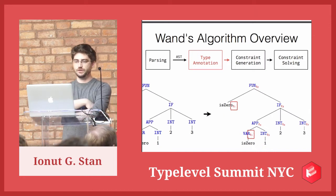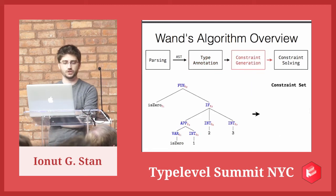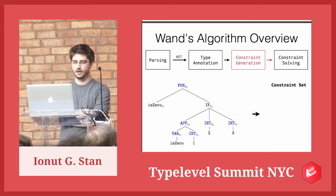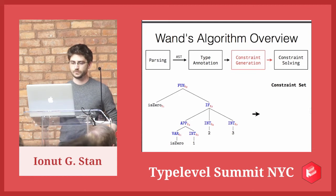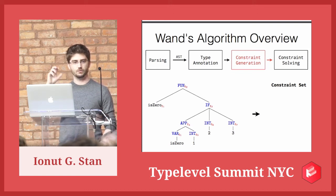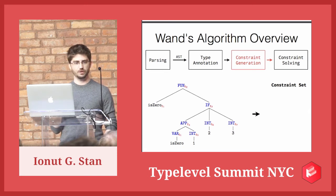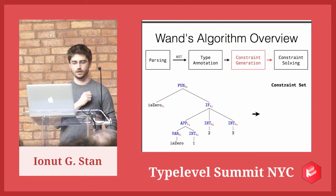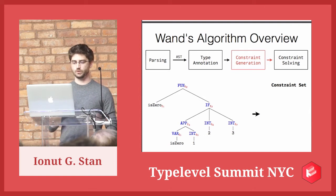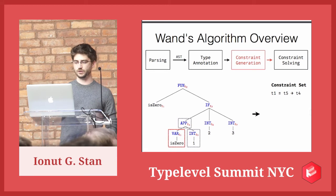Next part is the constraint generation phase of the algorithm — another function which takes as input this annotated tree and produces a constraint set. This is an actual set; you can implement it in Scala using a set, and a constraint can be a case class. It just goes over the nodes of the tree and, based on the relationship between them, deduces what are the constraints on each node. For example, here we have an application node — the APP node — with two children: a VAR T1 node, which is the isZero parameter used as a function, and the argument for that function is 1. That means T1 must be a function from T5 to T4.